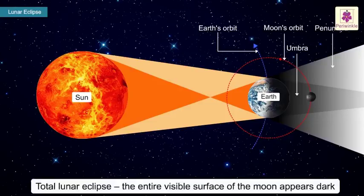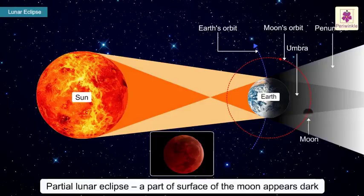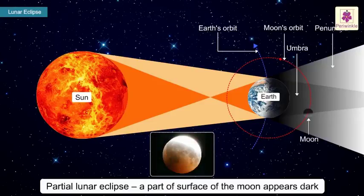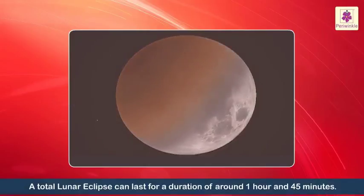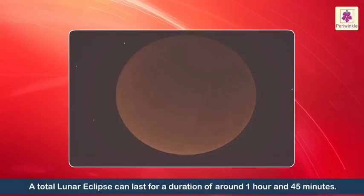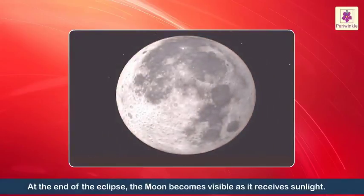Consequently, either the entire visible surface of the Moon appears dark, that is, total lunar eclipse, or a part of it appears dark, that is, partial lunar eclipse. A total lunar eclipse can last for a duration of around 1 hour and 45 minutes. At the end of the eclipse, the Moon becomes visible as it receives sunlight.